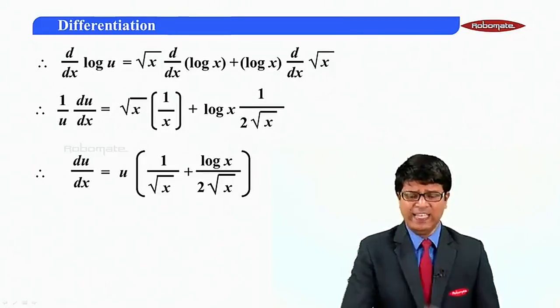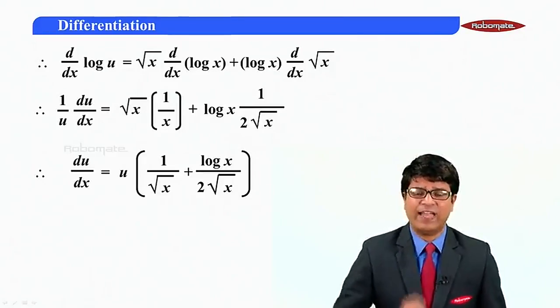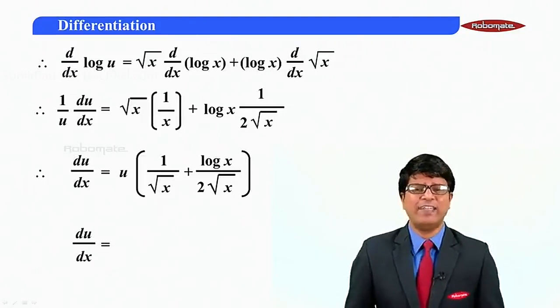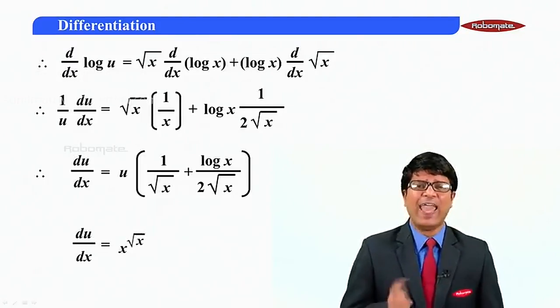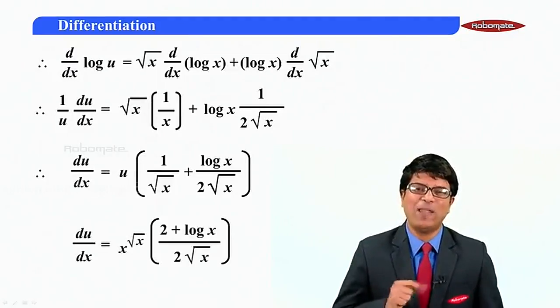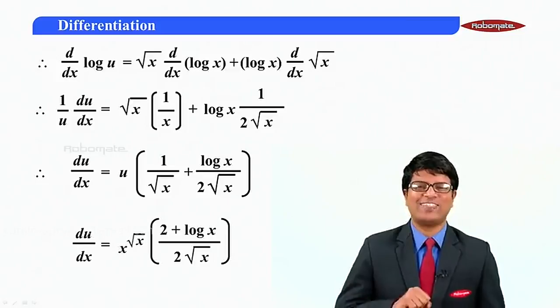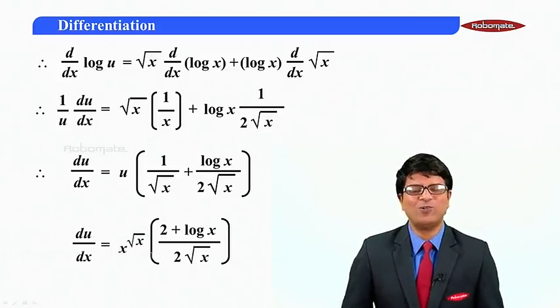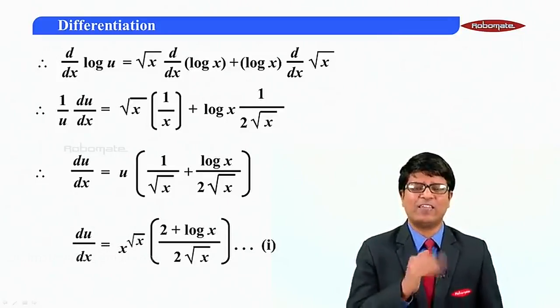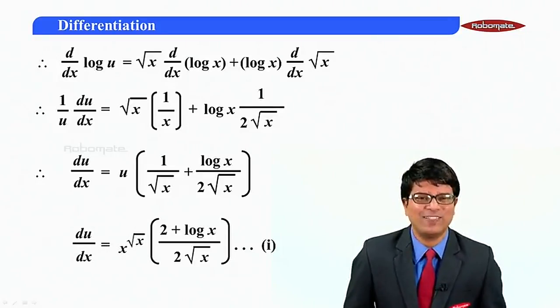Taking the LCM and resubstituting the value of u, I get du by dx as x raised to root x times the quantity 2 plus log x upon two root x. Let us name it as the first equation.